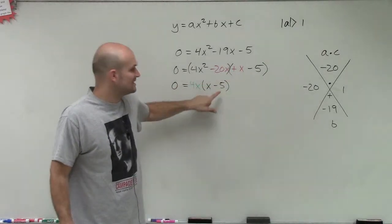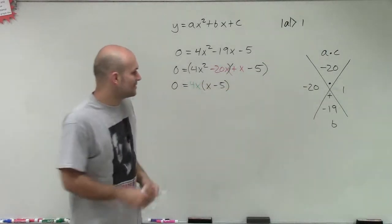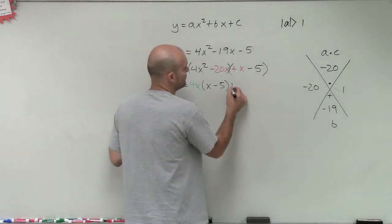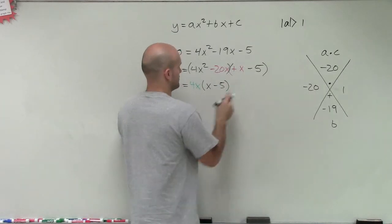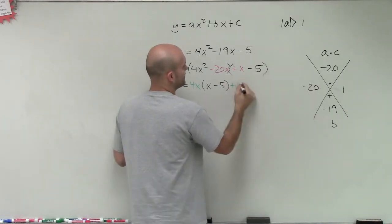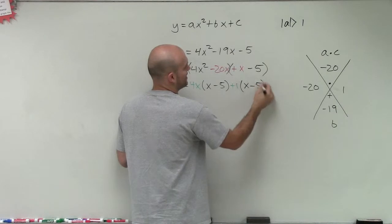Then you can see over here, I want to get this factor to be the exact same as this factor. So I'm going to factor out a positive 1. Let's write that in green. Therefore, that's going to leave me with still an x minus 5.